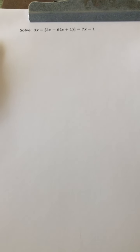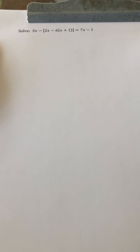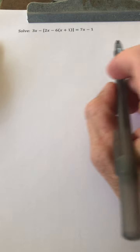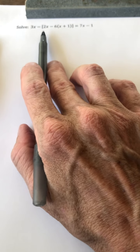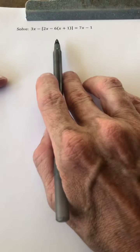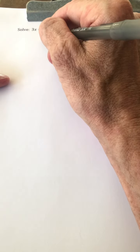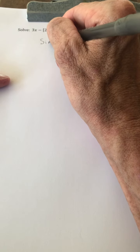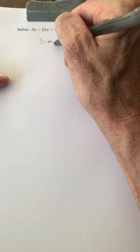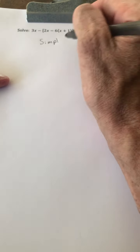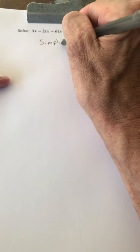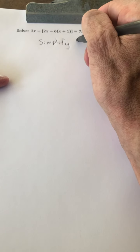like we had in the previous problem, and this example is very similar, if you look closely you'll see we have two sets of grouping symbols. So we're going to simplify the left-hand side and start from the inside, work our way out.